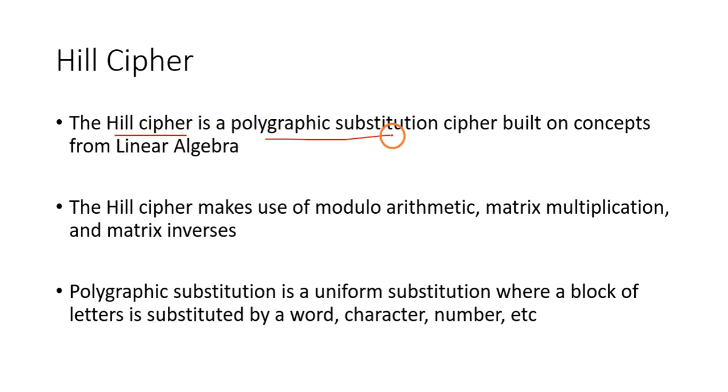The Hill cipher is called a polygraphic substitution cipher. You already know what is substitution cipher. Polygraphic substitution is a kind of uniform substitution where one or more characters, that is a block of letters, is substituted with another word or a character or number.